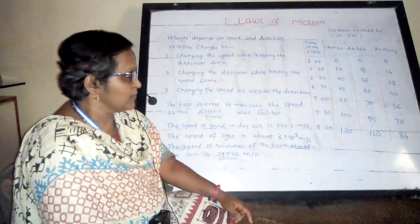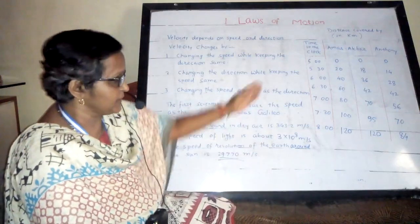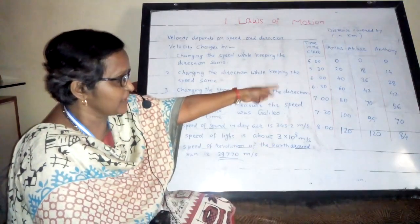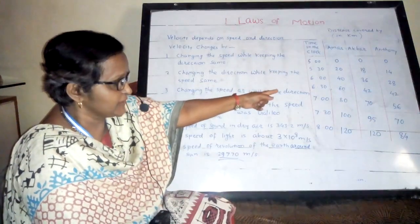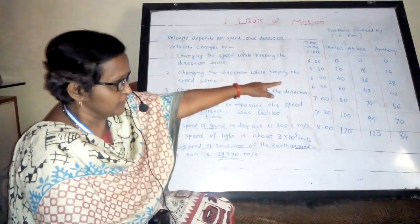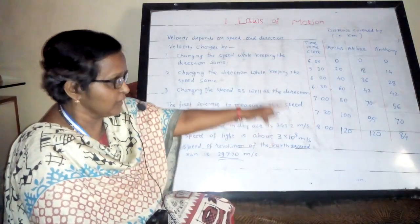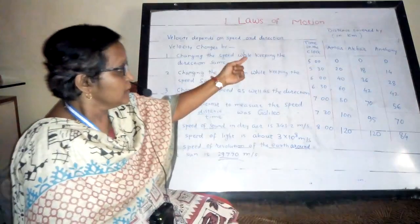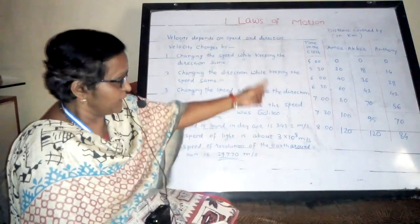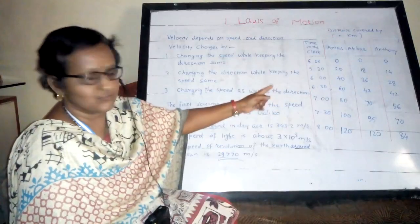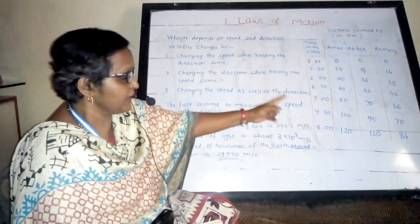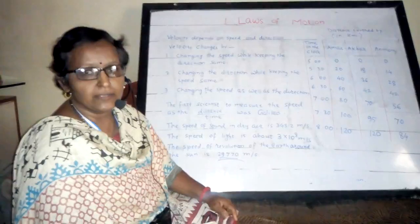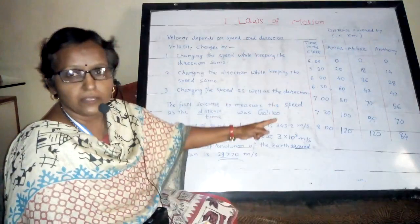Are these three covering the same distance in the same time intervals? From the table, Amar covers exactly 20 km every half hour — a uniform pattern. But Akbar has not covered the same distance every half hour: 18, 36, 42, 70, etc. — not uniform. Anthony covers 14 km each half hour — also equal distances. So Amar and Anthony have covered equal distances in equal time intervals, which is called uniform linear motion. Akbar has not, which is called non-uniform motion.